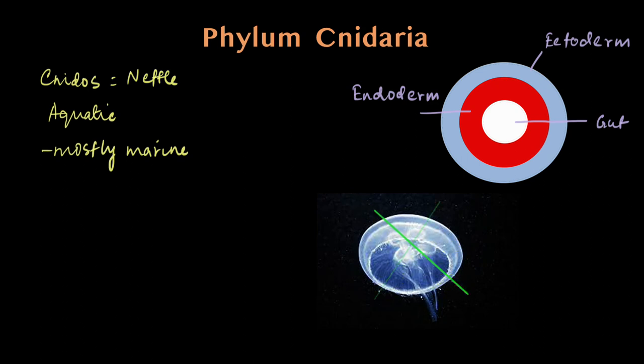When there are more than one such planes, it's called radial symmetry, as opposed to bilateral symmetry where there is just one plane which divides the body into two equal parts. So this is radial symmetry.